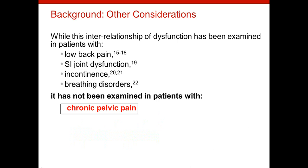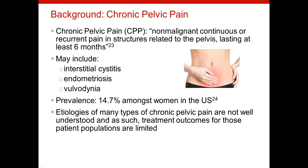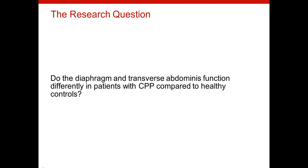While this interrelationship of dysfunction has been demonstrated with low back pain, SI joint dysfunction, incontinence, and breathing disorders, it has not yet been demonstrated in patients with chronic pelvic pain. Chronic pelvic pain is pain in the pelvis lasting at least six months in duration and can include a variety of diagnoses, including interstitial cystitis, endometriosis, and vulvodynia. The prevalence is high among women in the U.S. at 14.7%, and unfortunately the etiologies of these diagnoses are not well understood, so treatment outcomes are limited. This leads us to our research question: do the diaphragm and transverse abdominis function differently in patients with chronic pelvic pain compared to healthy controls?